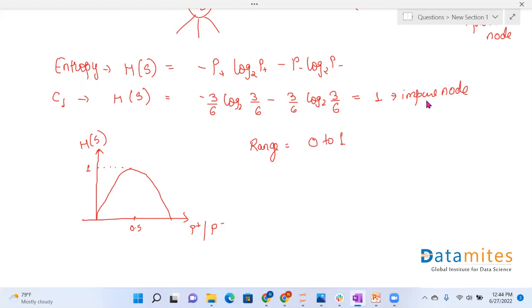If we have 1, that is an impure node. If we have 0, that is a pure node.